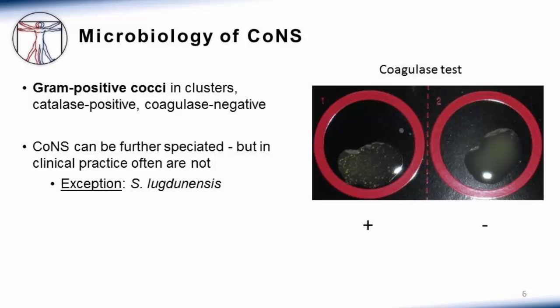In practice, coagulase negative staphylococci can be further speciated. There are a number of different species that cause human infections, such as staph epidermidis, staph hominis, and staph capitis. But in clinical practice, labs often will not differentiate these because they cause a similar spectrum of illness. As long as you know this is a coagulase negative staph infection and know the antimicrobial susceptibility profile, it may not be relevant to know exactly which species you're dealing with.